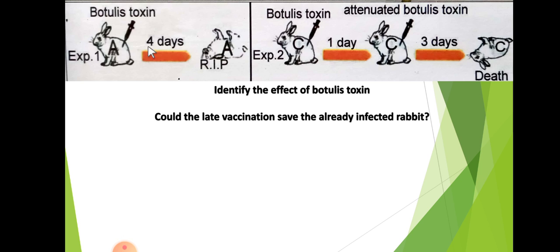Here we have Rabbit A. We inject it with a toxin — we know that the toxin is fatal, meaning it will die. After four days, R.I.P.